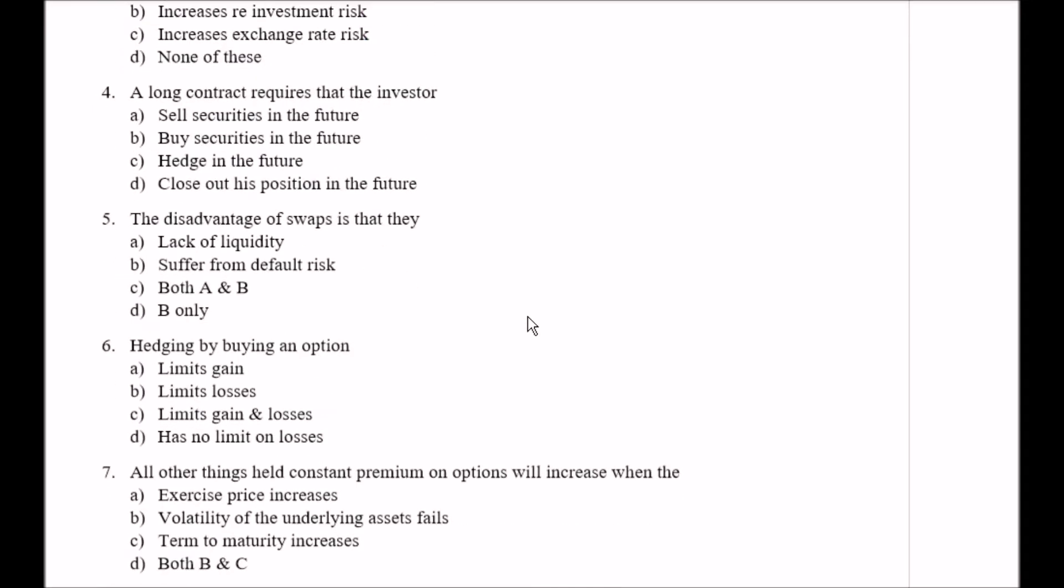Question number four: A long contract requires that the investors Option A sell securities in the future, Option B buy securities in the future, Option C hedge in the future, Option D close out his position in the future. Here your right answer is Option B, that is buy securities in the future.